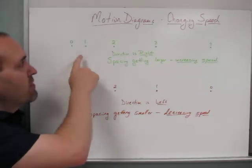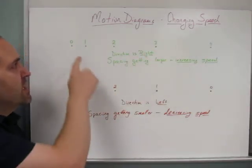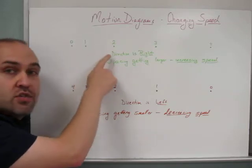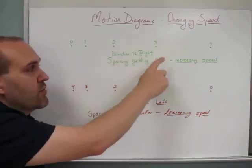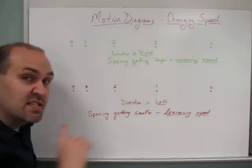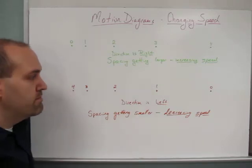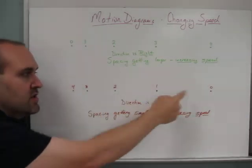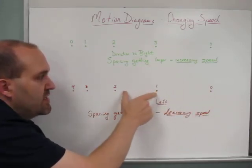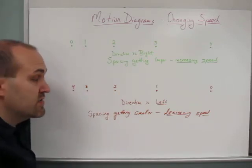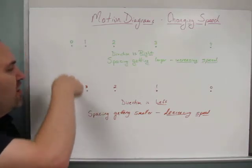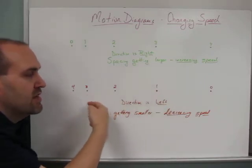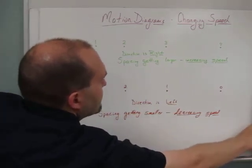Here are two more examples. In the green diagram, the object moves to the right, and the spacing between frames is getting larger — from zero to one, one to two, two to three, and so on — which indicates the speed is increasing. In the brown diagram, the object moves to the left, and the spacing is getting smaller as it goes, meaning the object is slowing down. Just by reversing the numbering of the green and brown diagrams, we can tell one is moving right and speeding up, the other moving left and slowing down. We'll practice more with those in the classroom.